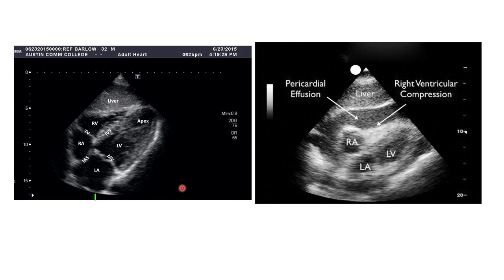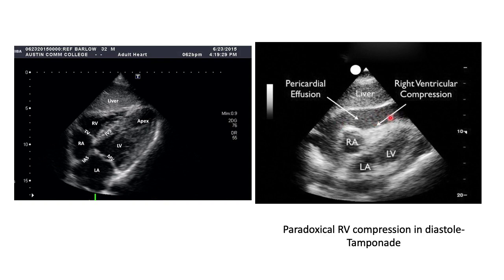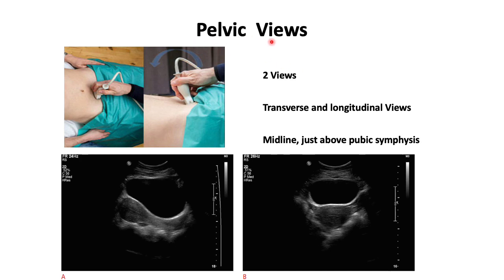Examples of free fluid around the heart, or pericardial effusion: a normal heart shows the RA, RV, LA, and LV using the liver as a window. On the abnormal image, you can see indentation on the right ventricle with free fluid outside the heart within the pericardium. This represents paradoxical RV compression in diastole, which amounts to tamponade — this is an emergency.